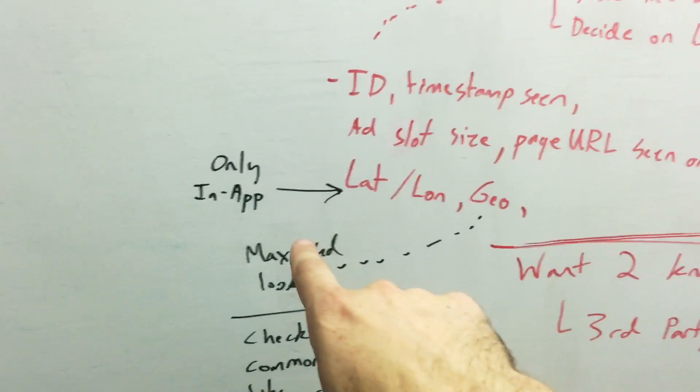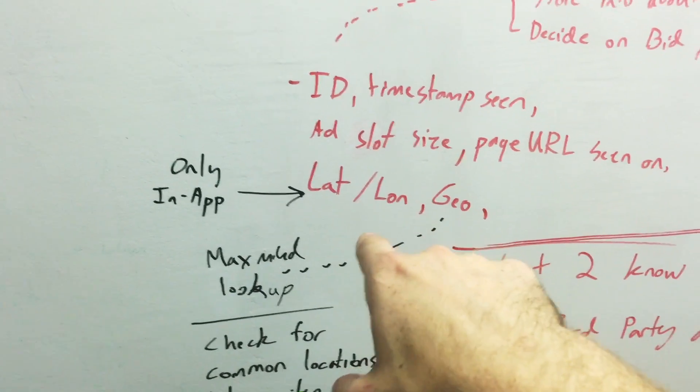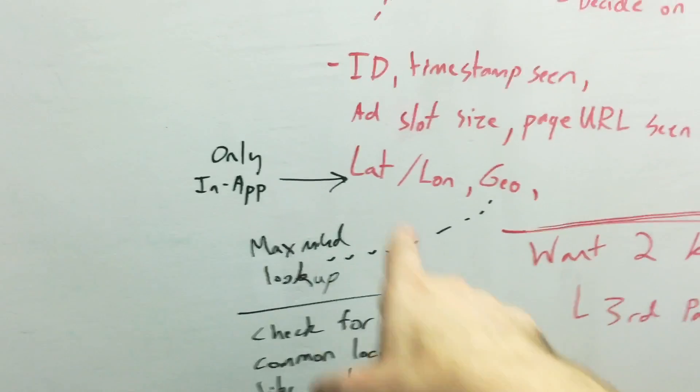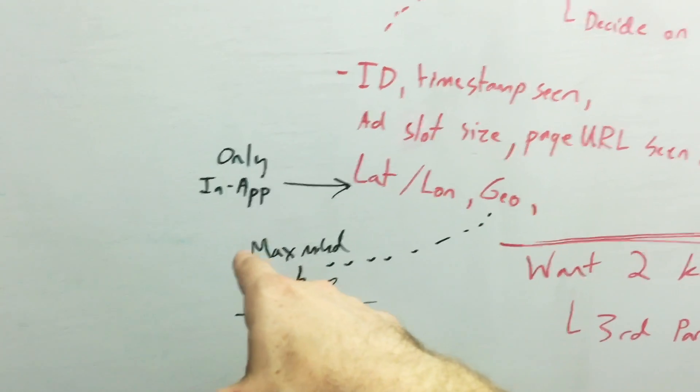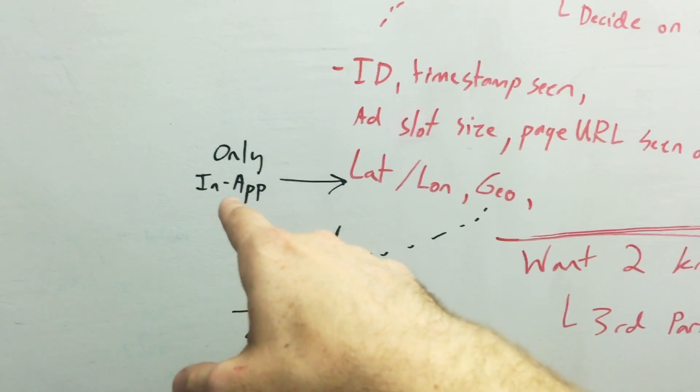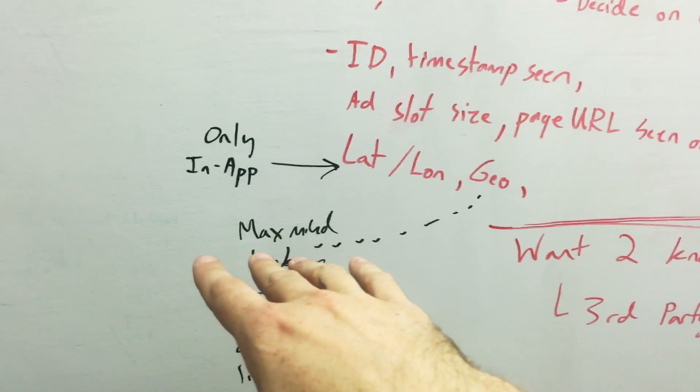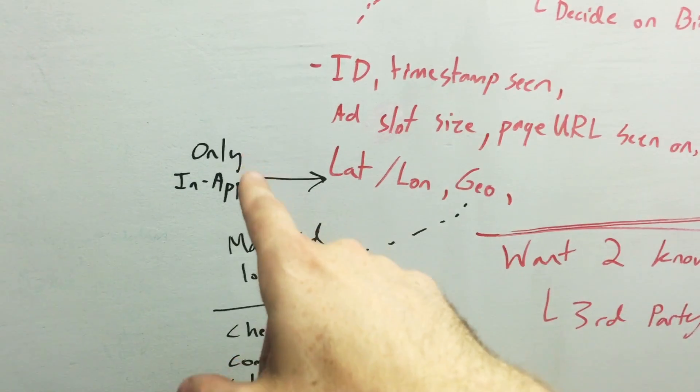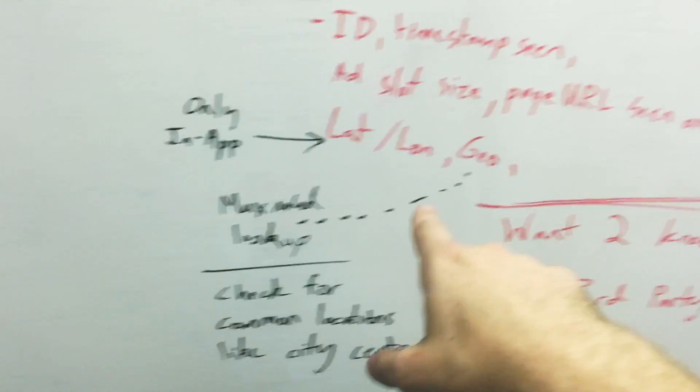Then you maybe capture their geography, so latitude and longitude, which would only be from like in-app, at least accurately, is usually just from in-app ad slots. So if somebody's on an app on their iPhone and says like do you want to share your location for some reason that the app would use it, and then what in reality happens is they might use it but they might also sell that to DSPs, so we know their latitude and longitude.